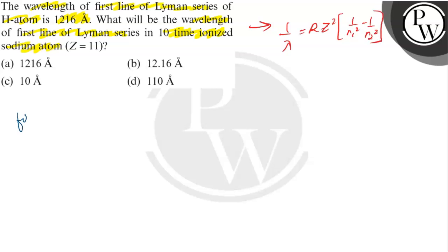If we can see, for H atom, what we have? Z is equal to 1 and lambda is also given 1216 Angstrom.